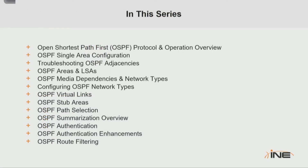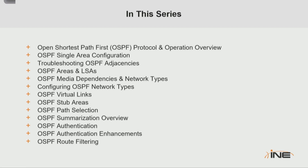In this series specifically, we first talk about a general overview of OSPF and how it works. We look at OSPF single area configuration, how do we troubleshoot OSPF adjacency problems, we talk about the different LSAs within OSPF and what are the differences between them, we talk about media dependencies and the network types, including the designated router and backup designated router election, how do we configure the different OSPF network types, and OSPF virtual links.